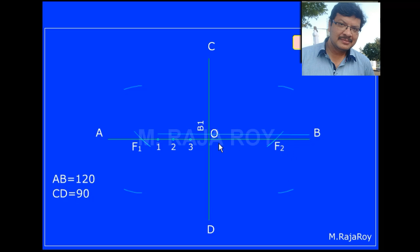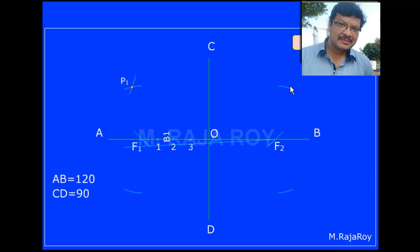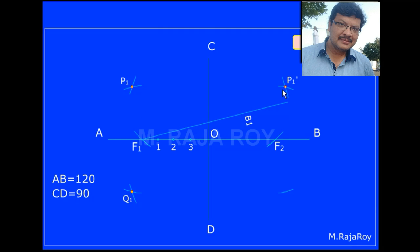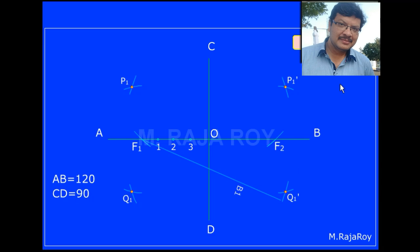Now take B1 as radius with F2 as center and draw an arc as shown. This arc will intersect with the previous arc and you will get point P1. Draw one more arc on the bottom side — this will intersect with the previous arc and we will get point Q1. Now with the same B1 radius, changing the center to F1, draw an arc. This arc will intersect with the previous drawn arc and we will get point P1 dash. On the bottom side also, draw an arc with B1 radius and F1 as center — that will intersect and you will get Q1 dash as shown.